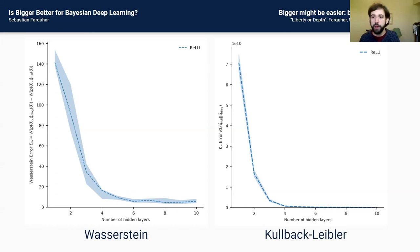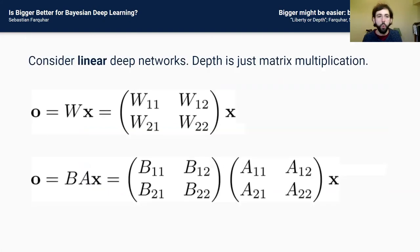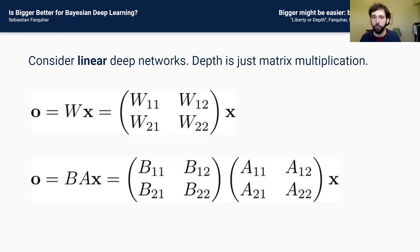If true, that would be quite exciting — it would mean we could set aside complicated, expensive structured approximations and just assume all weights are independent of each other, letting us scale potentially much better since many things are now only linear in the number of parameters. To understand why, it helps to get rid of nonlinearities for a moment and consider linear deep networks, where depth is just matrix multiplication. A linear regression with a 2D input and 4-element weight matrix is equivalent to splitting into two layers where W equals BA.